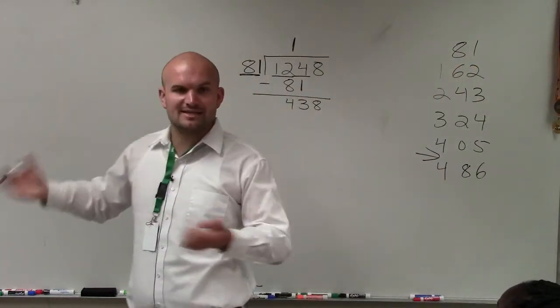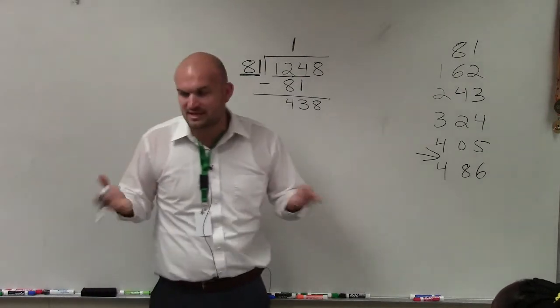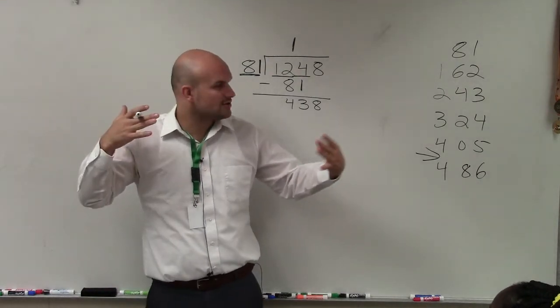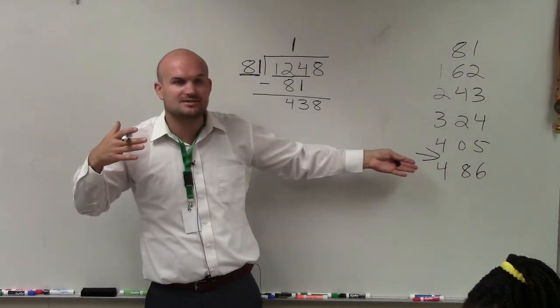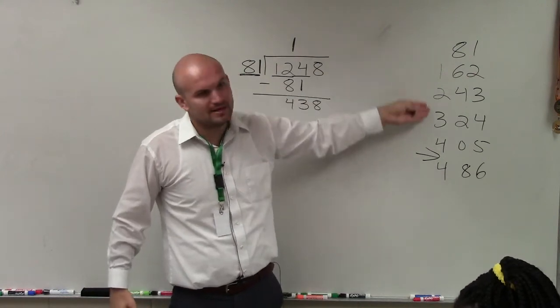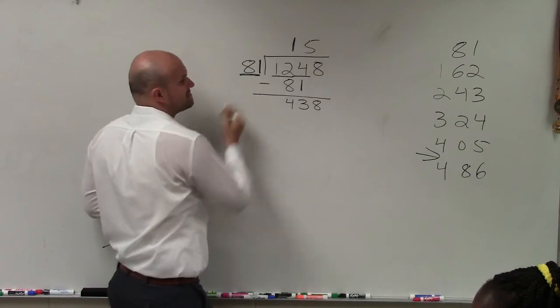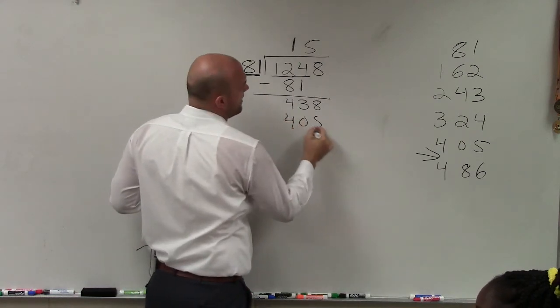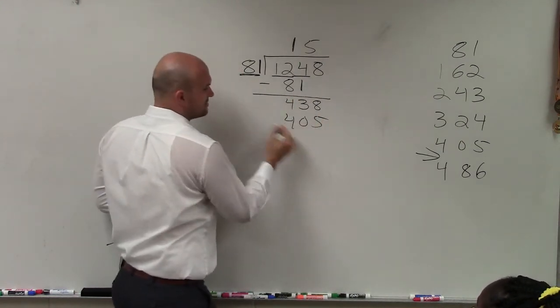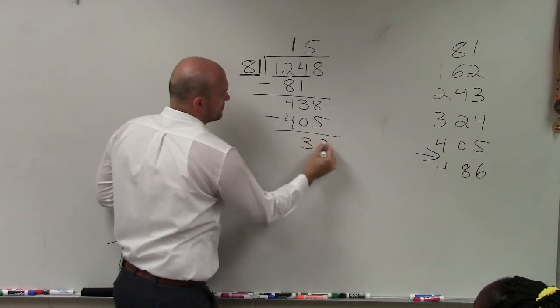So when you guys are thinking about multiplication, don't try to get in there and try to guess where exactly it's going to be. Just keep on listing those multiples. So therefore, it goes in there five times. Five times 81, we said was 405. Subtract 33.